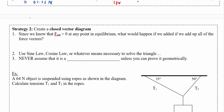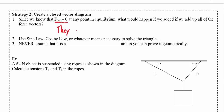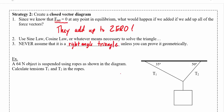The second strategy is using something called a closed vector diagram, which relies on a bit more trig. Since we know that the net forces all have to add up to zero at any point in equilibrium, if you add all the vectors together even in two dimensions, they would add up to zero. Even if you don't get a right angle triangle, you can use sine law, cosine law, or whatever else to solve the triangle. The key is never assume it's a right angle triangle unless you can prove it geometrically.